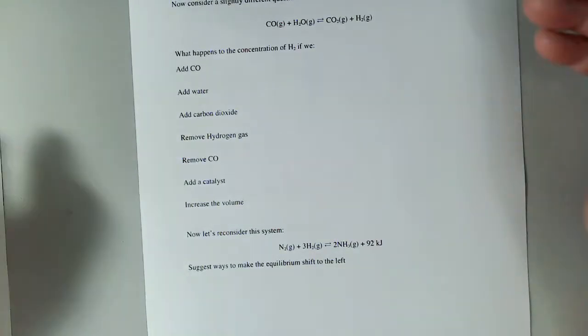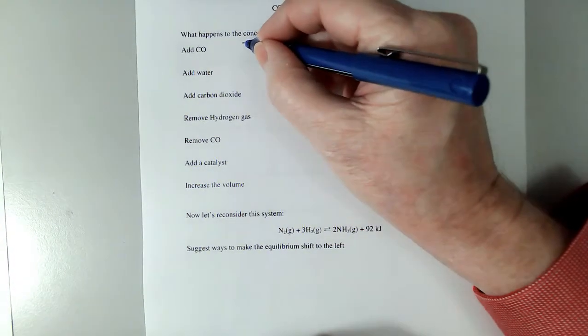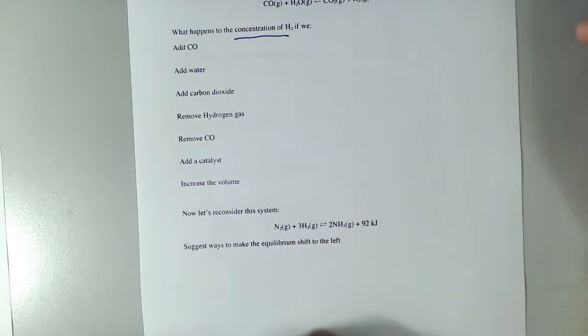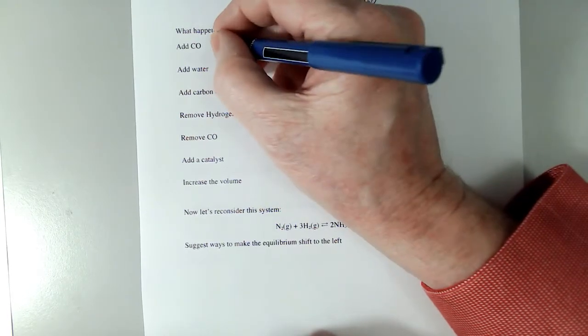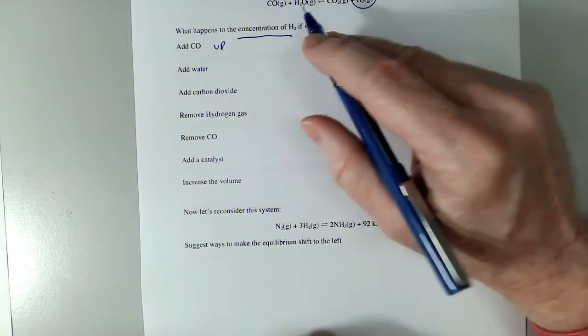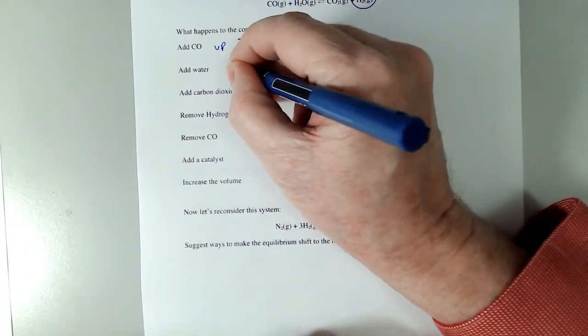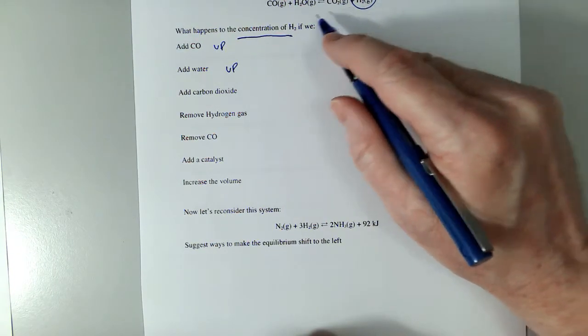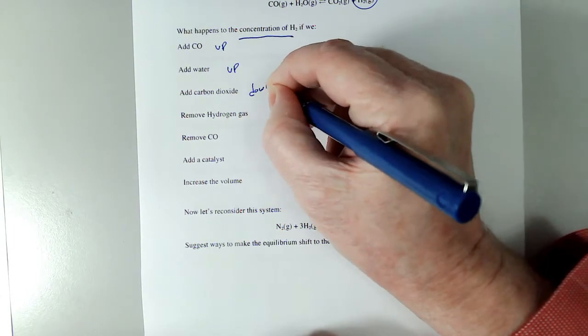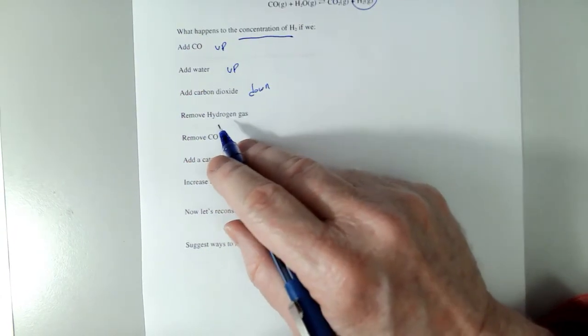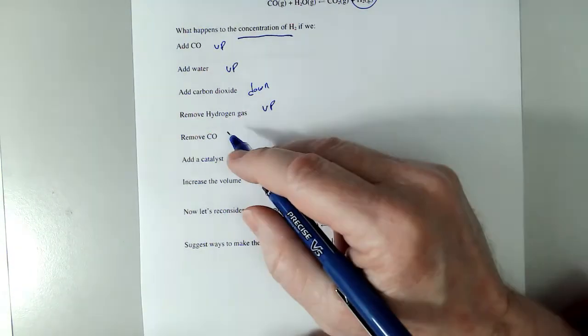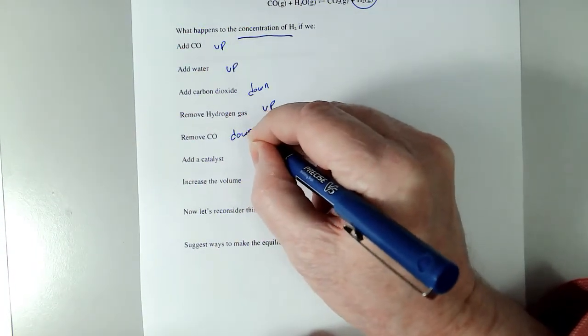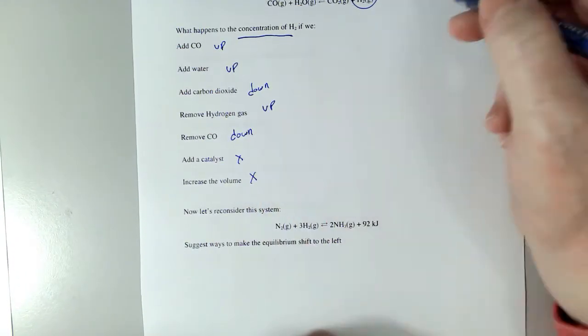Page 4. I'm going to ask you the same question I just asked you. But instead of saying right or left, what happens to the concentration of H2? And here's H2 over here. It's a product. So if I add CO, we know it shifts it to the right. That means the concentration of H2 goes up. If I add water, it shifts to the right, makes more H2, it goes up. If I add carbon dioxide, carbon dioxide consumes H2, shift it to the left, it goes down. Now, if I remove hydrogen gas, this is going to replace what we remove. So it shifts to the right, and it goes up. That's kind of a weird question. I remove it, and it goes up. You kind of see where I'm going with it. If I remove CO, that shifts to the left. So H2 will go down, adding the catalyst, and increases in the volume have no effect like they did before.